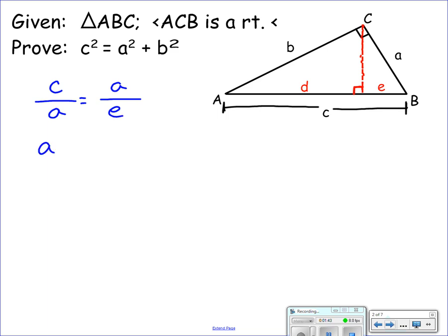So I know A squared equals C times E. A similar equation I can set up is B. The other leg is the geometric mean between the whole hypotenuse and the piece that's adjacent to that leg, which is D. So B squared equals C times D.